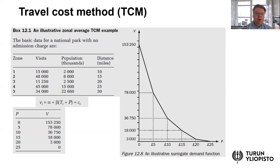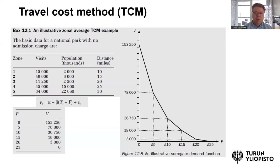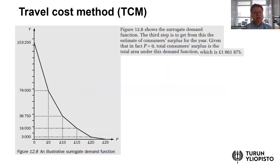There might be an entrance fee to the national park, which also reveals something. On top of the entrance fee, visitors must bear travel costs, which might include gasoline consumption and perhaps food and accommodation costs. The fact that people are willing to spend their own money to visit a national park indicates that the services provided by the park are worth something. The idea of the travel cost method is to use these distances — which correspond to travel costs — to develop a demand function for this service.